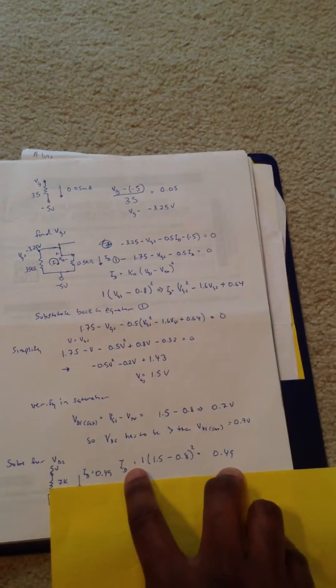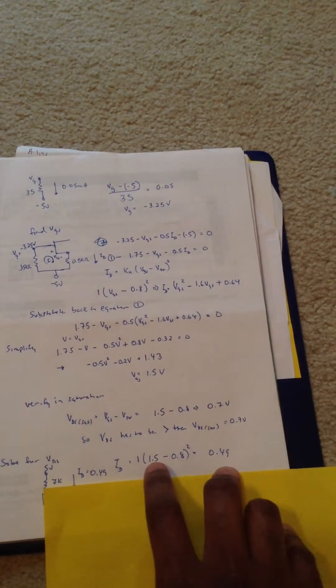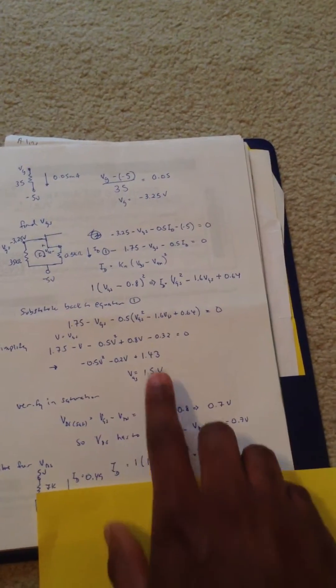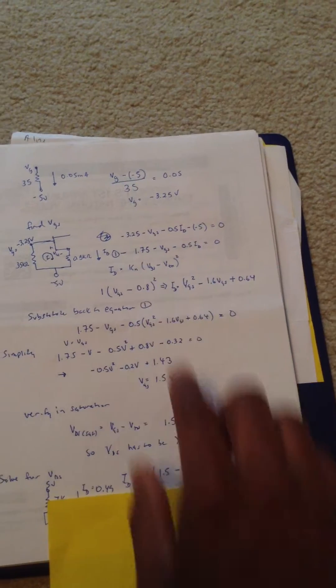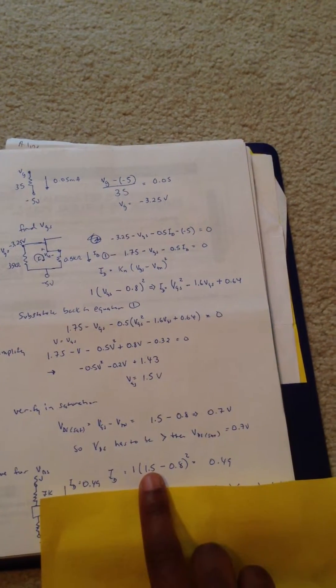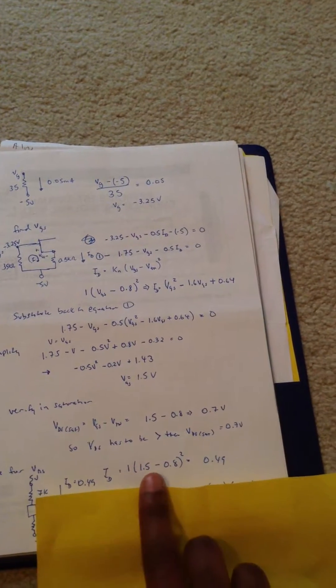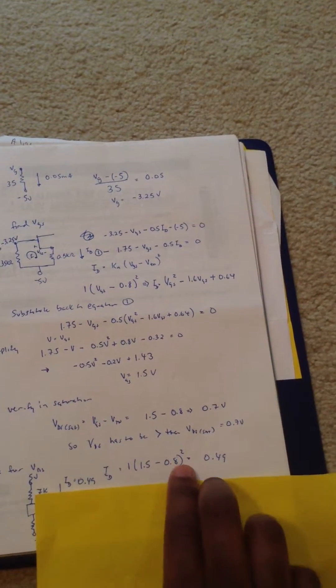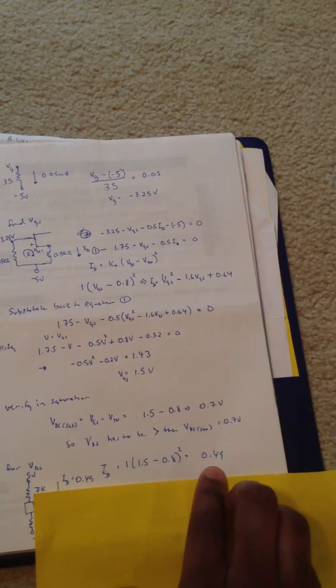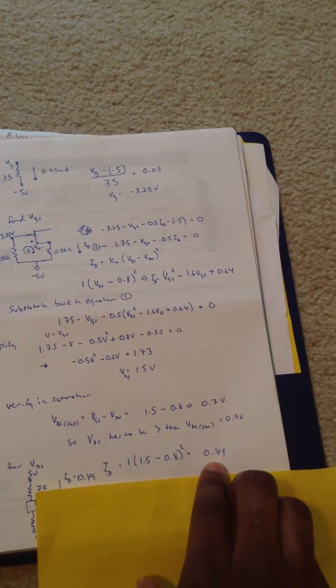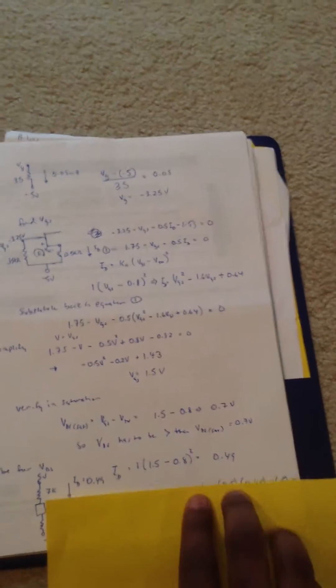And solving for ID, we use this ID equation, which is here. We solved for VGS, so now we can just plug that in. We have 1.5 minus 0.8 squared. And that equals 0.49. And that's going to be milliamps.